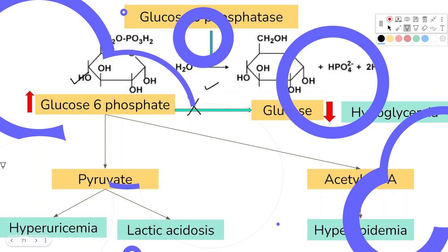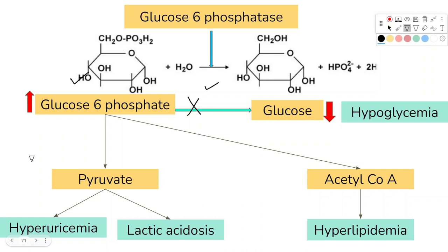There is increase in glucose-6-phosphate, and this substance will divert towards the pathway known as the pentose phosphate pathway. This will form more amount of purines, which get converted to uric acid, leading to hyperuricemia and gout-like changes.